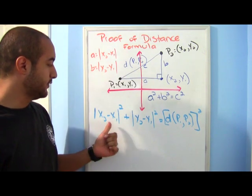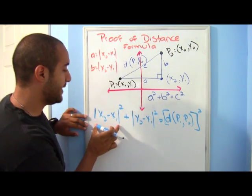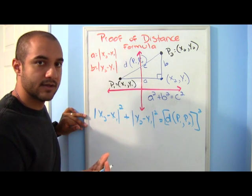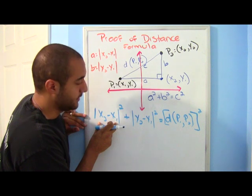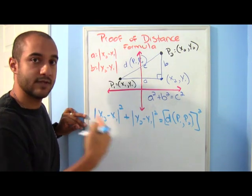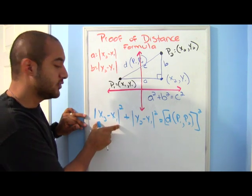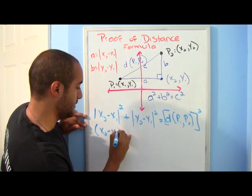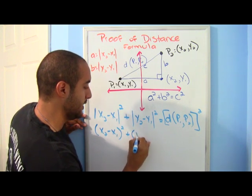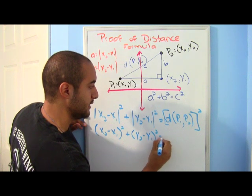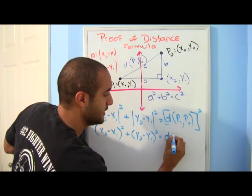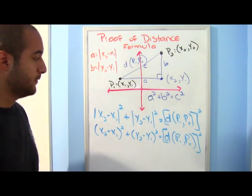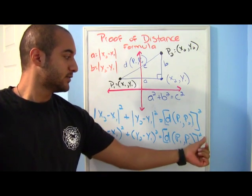Let's see some of the things we can do. If in my a this comes out to be a positive number and I square it, that's a positive times a positive — I get a positive number. If I get a negative number, it's a negative times a negative because it's squared, so that's also positive. So I actually don't need my absolute value anymore. I can get rid of that and just have x2 minus x1 squared plus y2 minus y1 squared equals the distance squared. Notice that this distance is squared — our c is still squared.